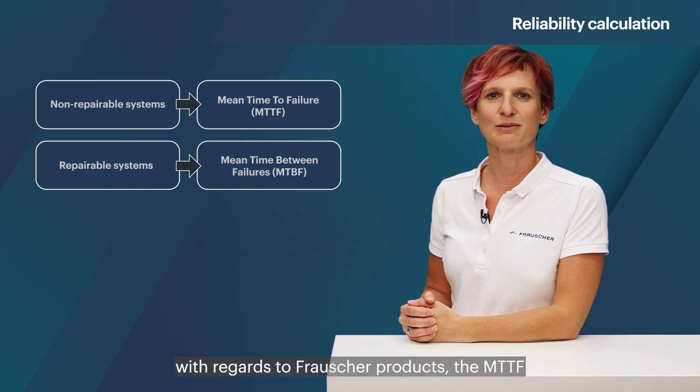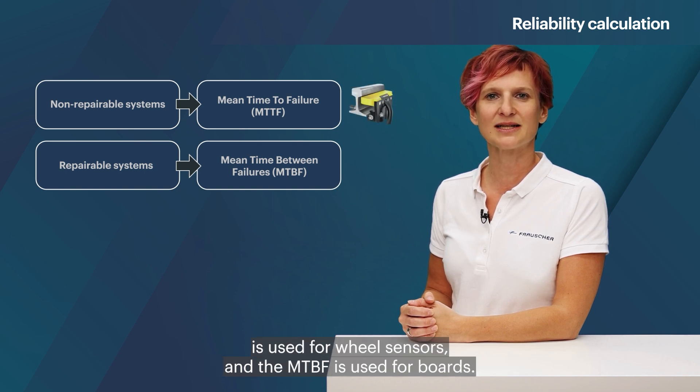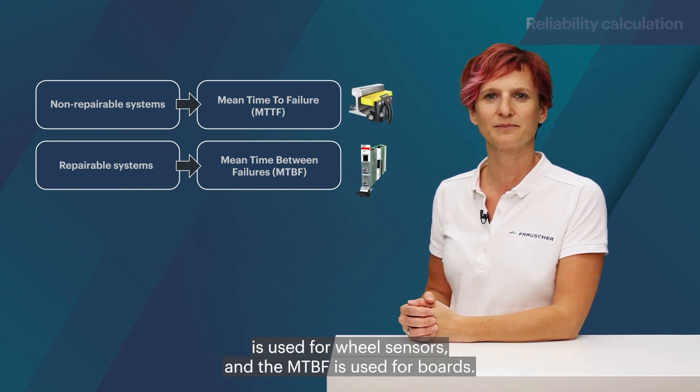For instance, with regards to Frausher products, the MTTF is used for wheel sensors and the MTBF is used for boards.